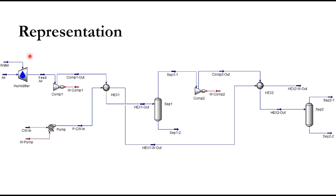In Aspen HYSYS there is no module available for the multistage compression system such as M-Compressor or multistage compressor. Instead, we have to place the equipment in the same style as a multistage compression system, which is available as a single module in Aspen Plus.